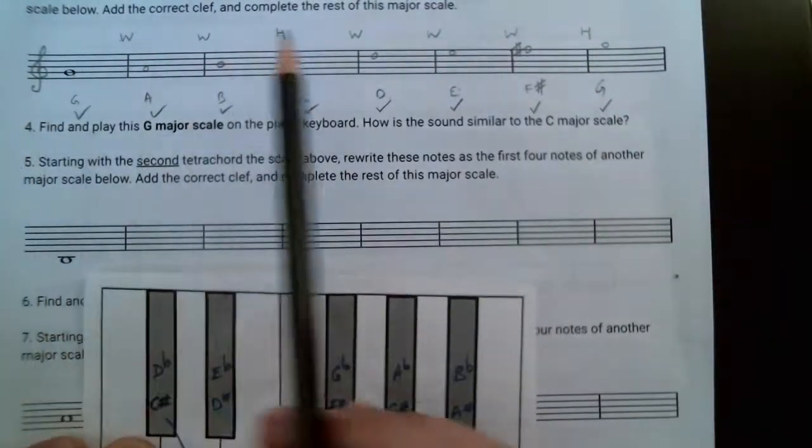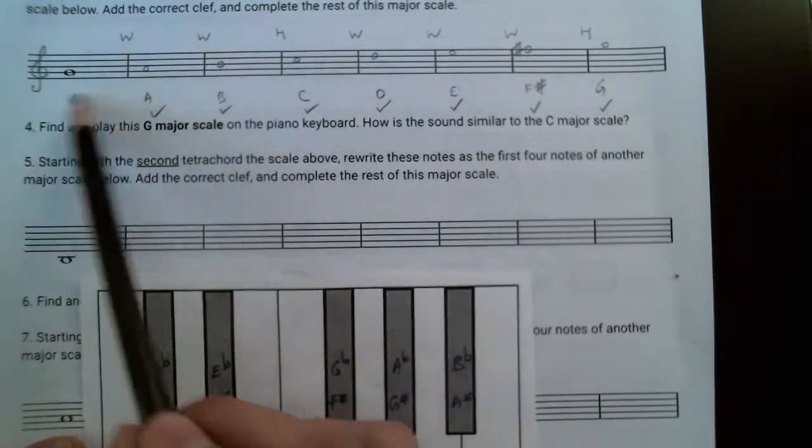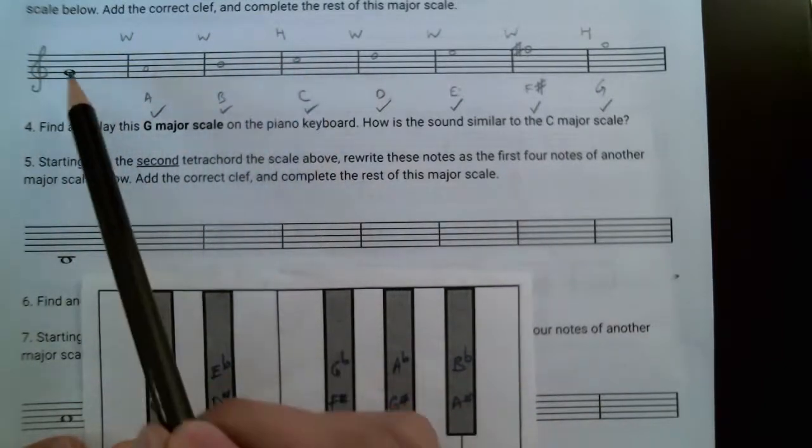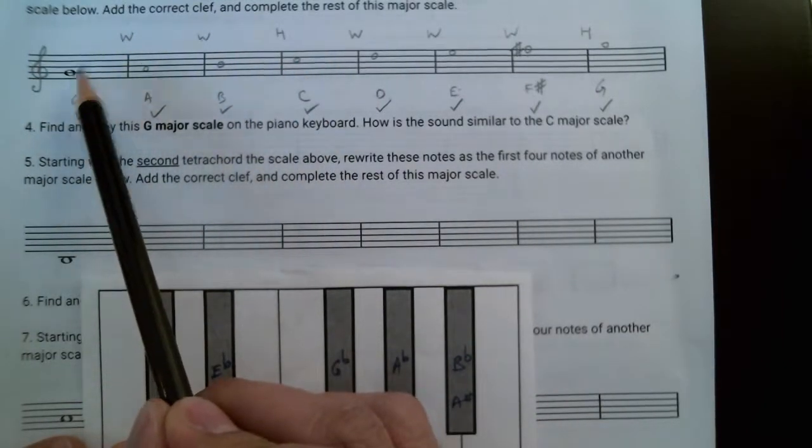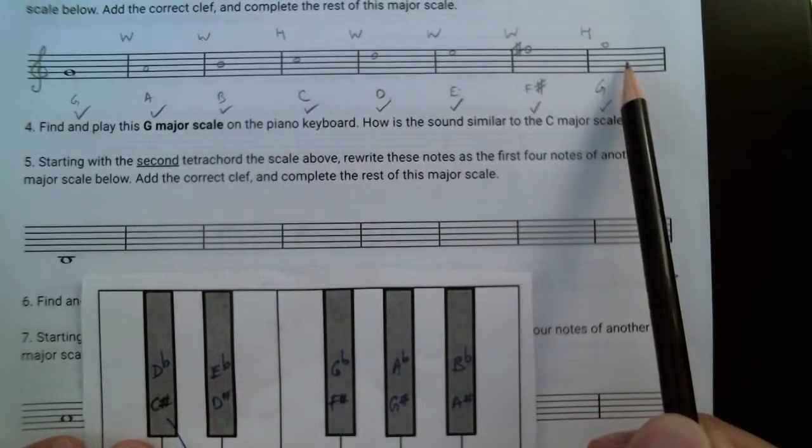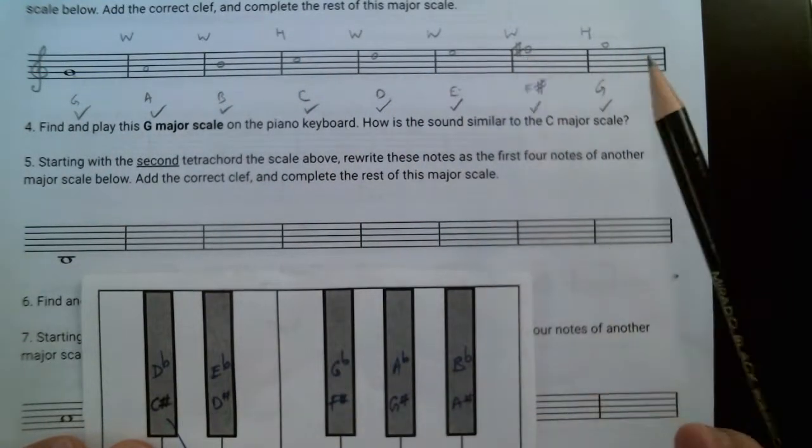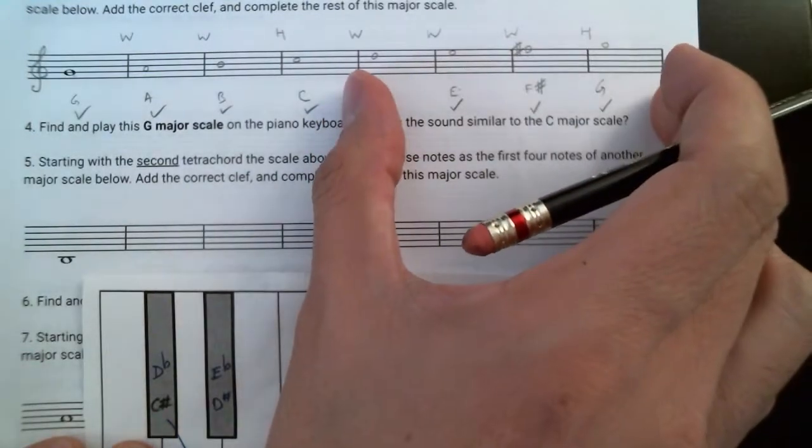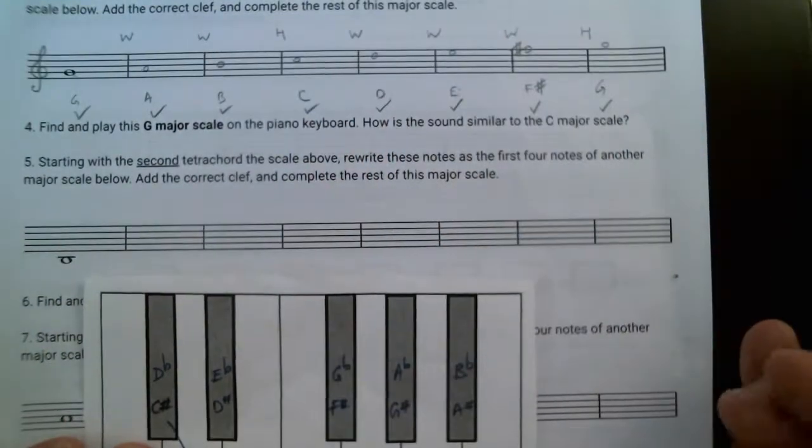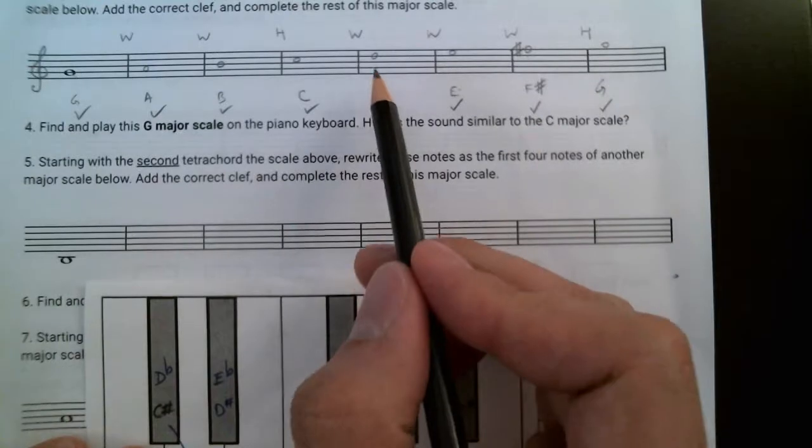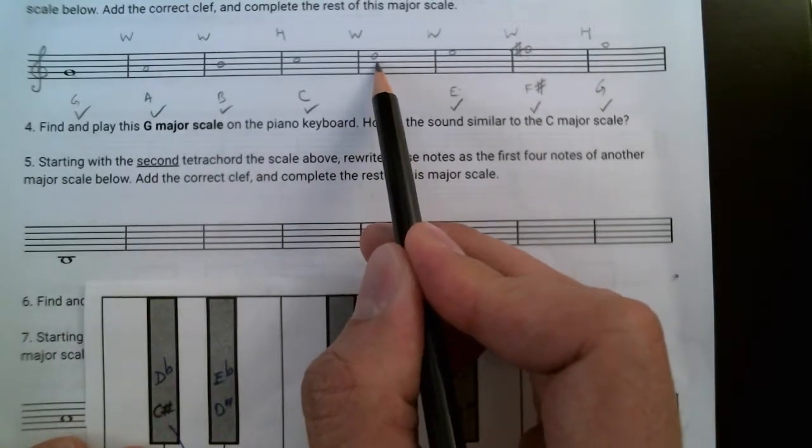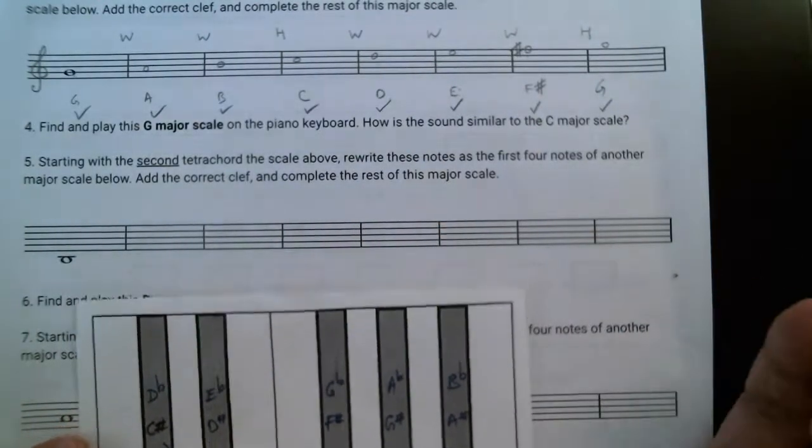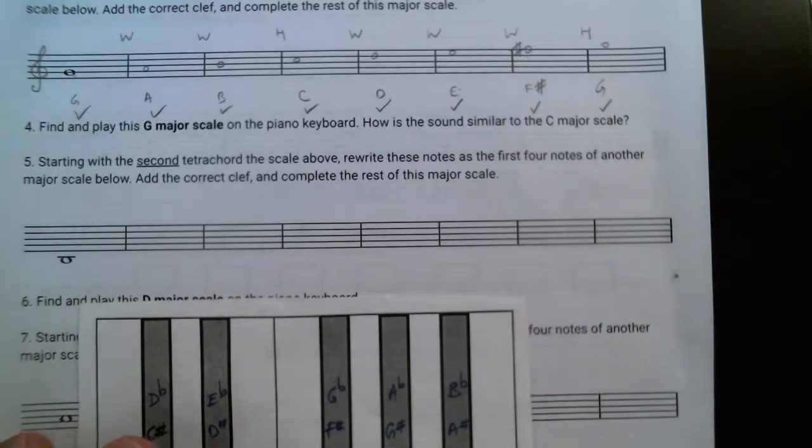Okay, so you can see that by starting with the second tetrachord of the C major scale and having that as the first tetrachord and extending it using the same pattern, we now added one sharp. And if we repeat this process for the next iteration, starting with D, the second tetrachord here, you'll notice that we'll add another sharp, and so forth and so on until we have seven sharps. And so that's how the scales are related to the tetrachord.